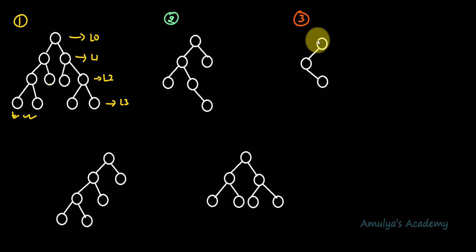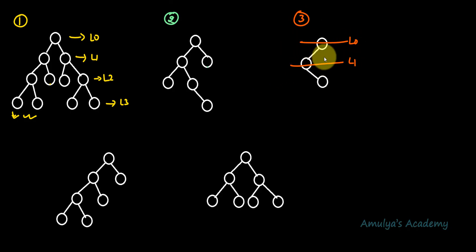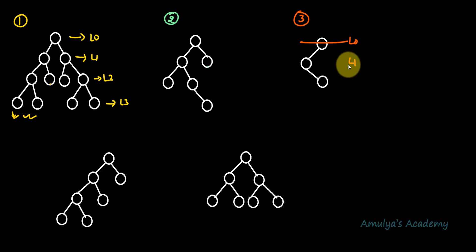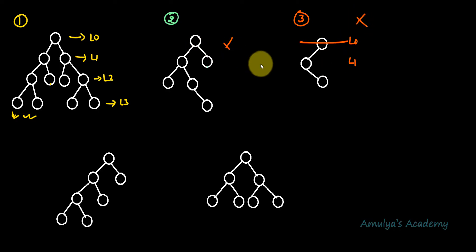The next example: level 0 is completed, but level 1 contains only one child node — it is not completed. Since level 1 is not the last level, this is not a complete binary tree.